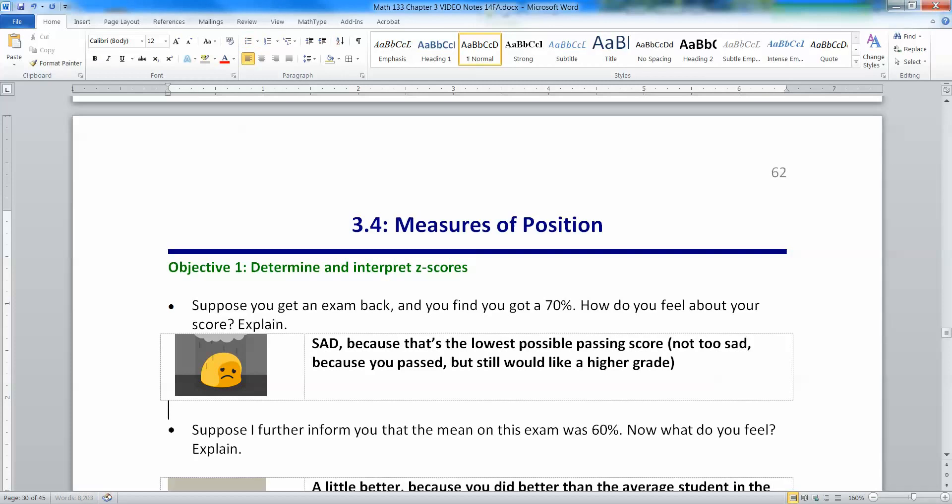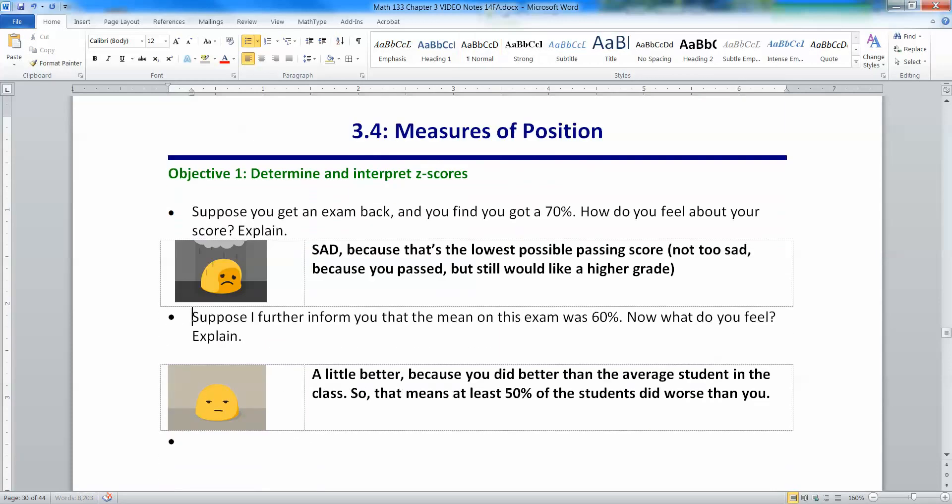Now suppose I further inform you that the mean on this exam was 60. Well wait a second. You scored a 70, the mean was a 60. Now you're thinking that's a little bit better. Not still great, but you know that you did better than the average student in the class. So that means that somewhere around 50% at least of the students did worse than you. So hey, you barely passed, but at least I did better than half the class.